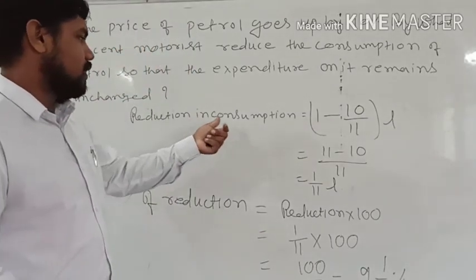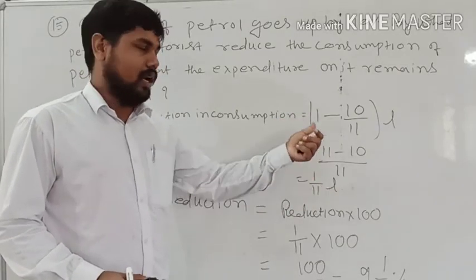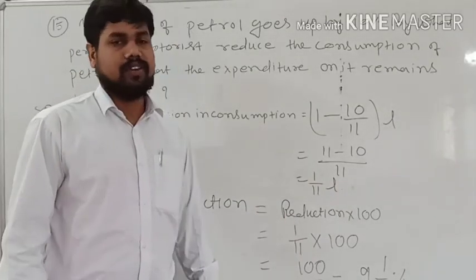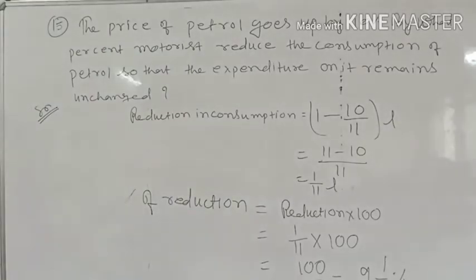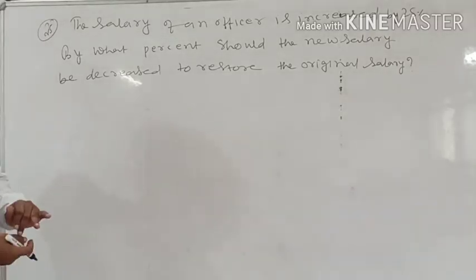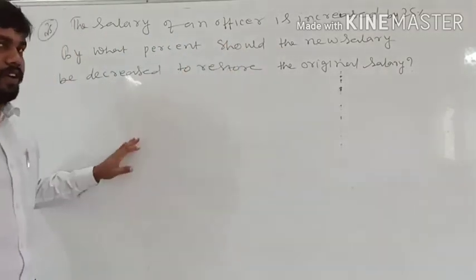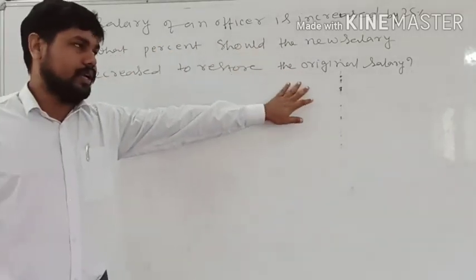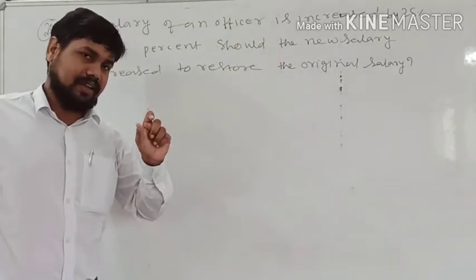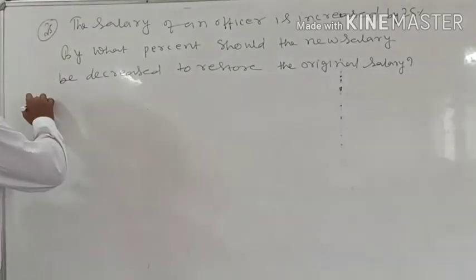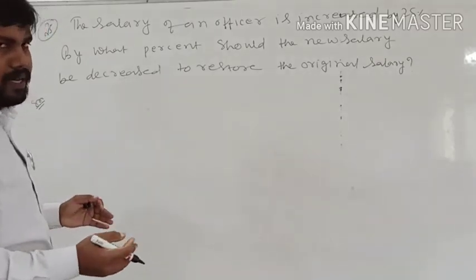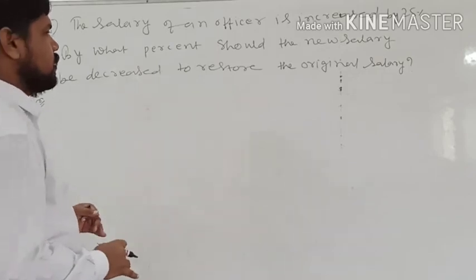After that we find the reduction in consumption by subtracting 10/11 from 1 liter — that much needs to be reduced. The percentage of reduction can be found like this. Now the next question discussed at the beginning of class: the salary of an officer is increased by 25%, and after that by what percent should it be decreased to restore the original salary, so that his salary becomes the same. Let us consider the original salary first.